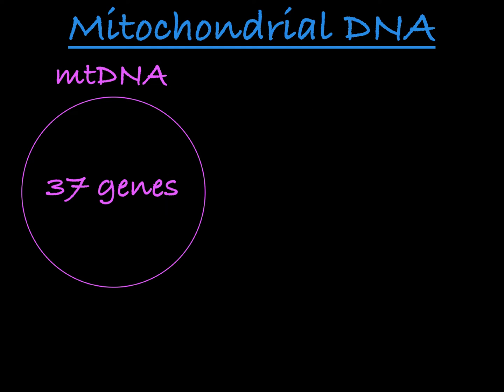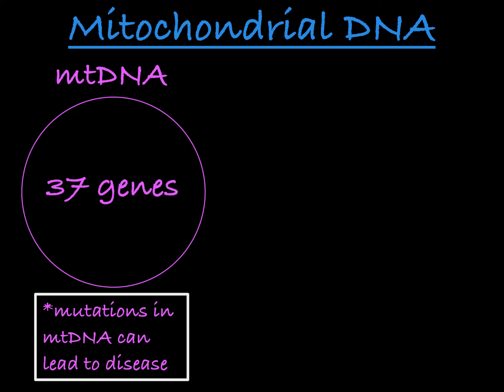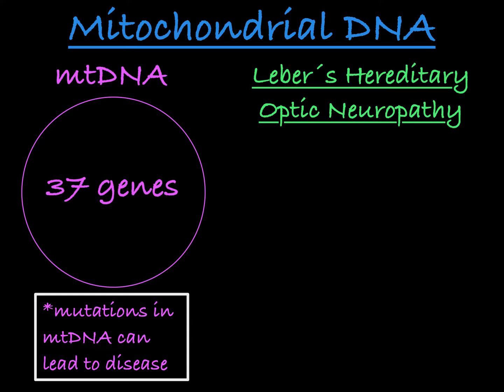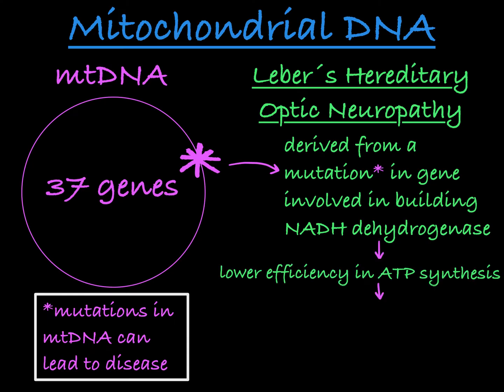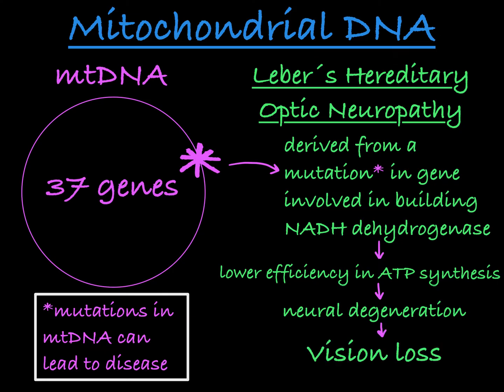Just as you see with the genes on chromosomes in the nucleus, mutations and deletions of mitochondrial DNA can lead to disease. For example, Leber's hereditary optic neuropathy is associated with the mutation of one of the protein-coding mtDNA genes involved in building NADH dehydrogenase, leading to lower efficiency of making ATP. In nerve cells in the optic system, this can lead to neural degeneration and vision loss.